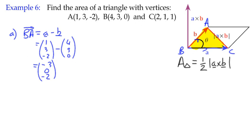I can then find vector BC, position vector C minus B, which is (2, 1, 1) minus (4, 3, 0), which gives me this vector (-2, -2, 1).